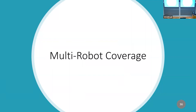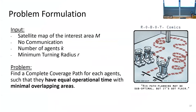That was the single-robot case. Now moving to multi-robot coverage, which is proven to be NP-hard from an algorithmic perspective. The problem we consider is offline coverage path planning with a satellite map, no communication between robots — motivated by large distances in the marine domain and remote locations. The vehicles have Dubins constraints — they cannot turn without a minimum turning radius. The problem is to find a complete coverage path for each agent with equal operational time and minimal overlapping areas.